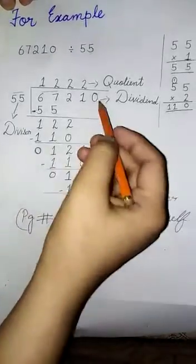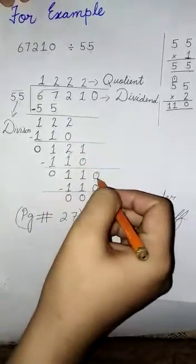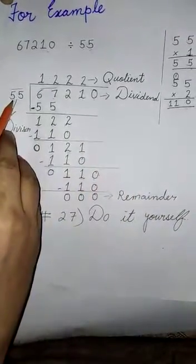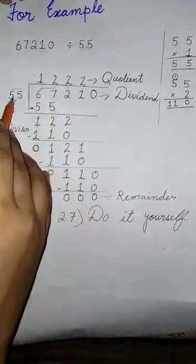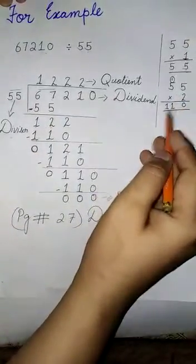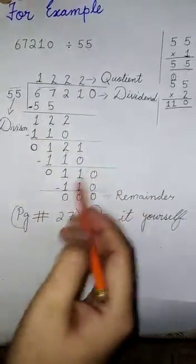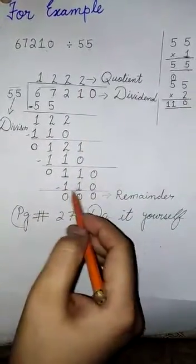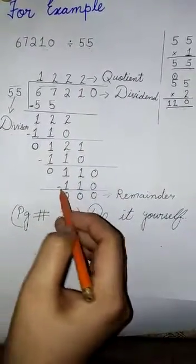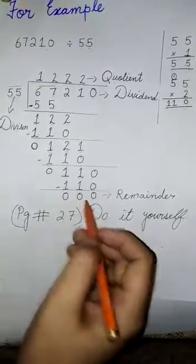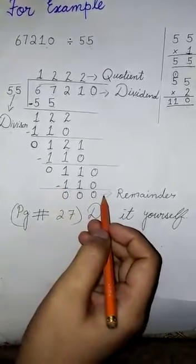So we bring down 0 from ones place. We multiply 55 into 2, we get 110. So we put 2 at quotient place and write the value of 110 below 110. We subtract then we get our remainder is 0.